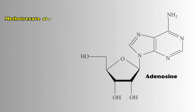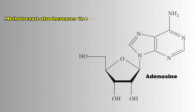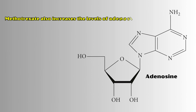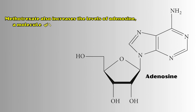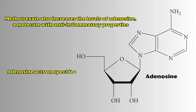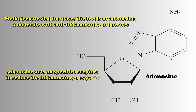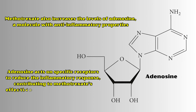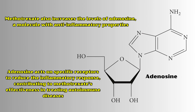Methotrexate also increases the levels of adenosine, a molecule with anti-inflammatory properties. Adenosine acts on specific receptors to reduce the inflammatory response, contributing to methotrexate's effectiveness in treating autoimmune diseases.